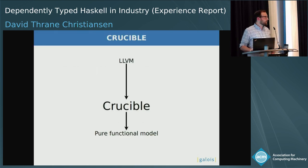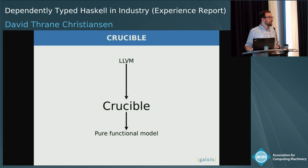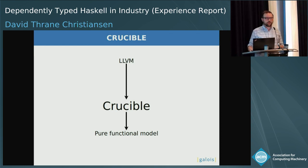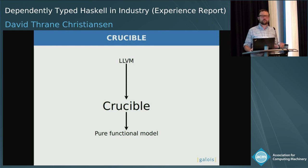So what did we make? We made a system called Crucible. Crucible is a framework for writing symbolic executors. You might take some LLVM intermediate representation — say you compile a C program with Clang — and then it'll take it in, crunch through it, and at the end of the day it'll spit out a pure functional model of everything that that program does, if the termination behavior of the program is obvious enough for this technique to make sense.